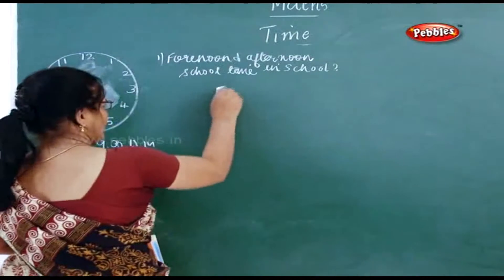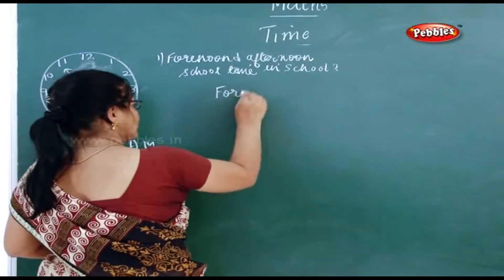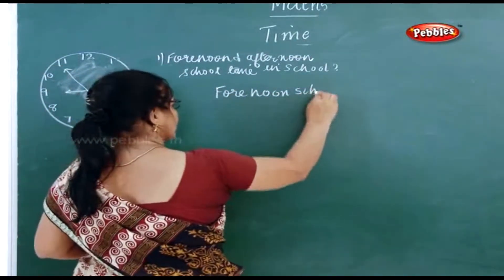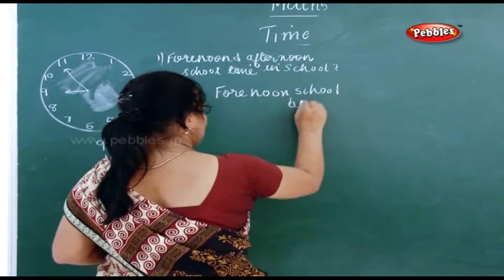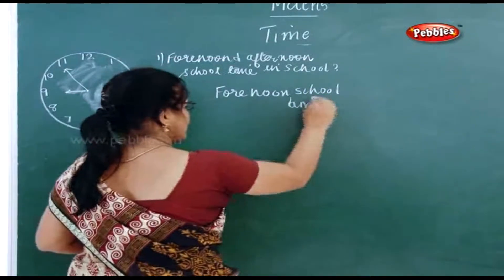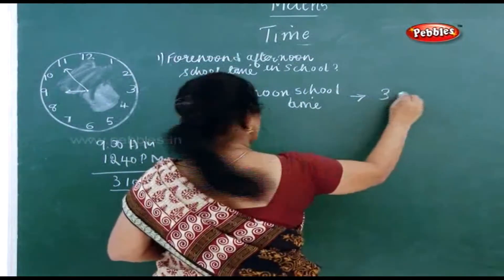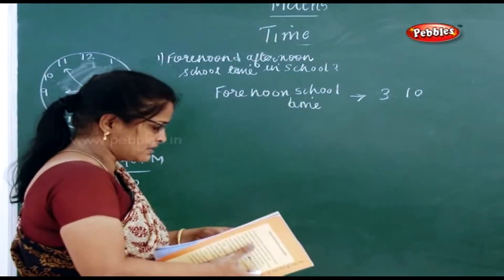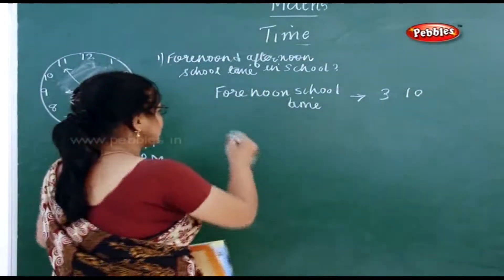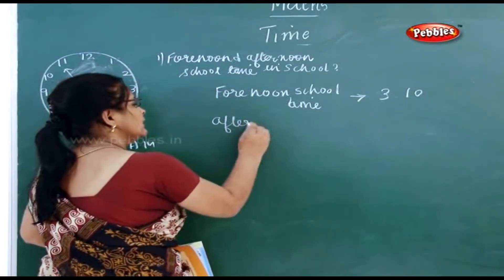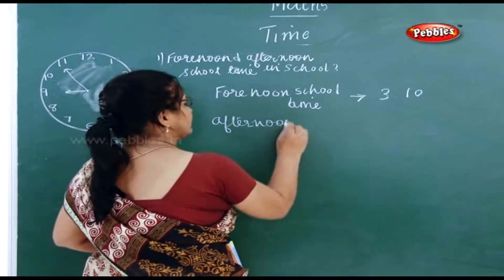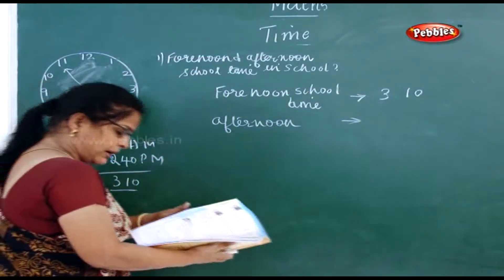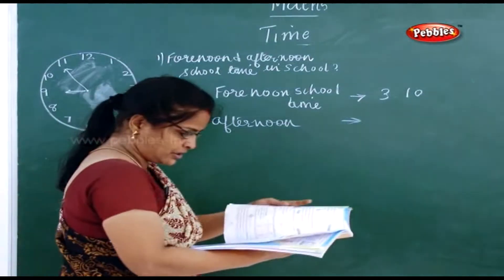You have to write: forenoon school time is 3 hours and 10 minutes. Now what is the afternoon school time? Again you have to see the schedule.